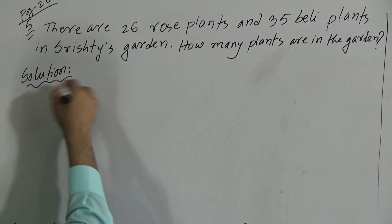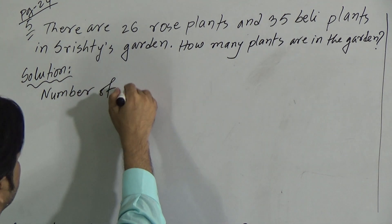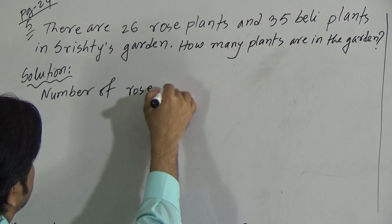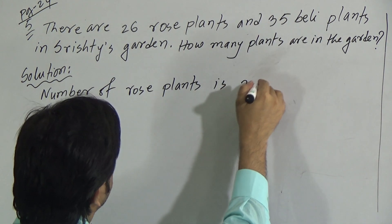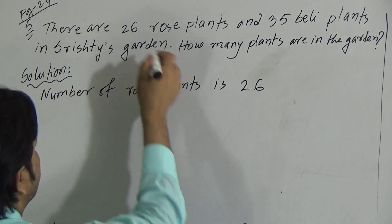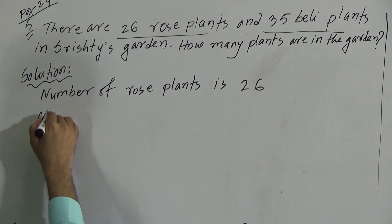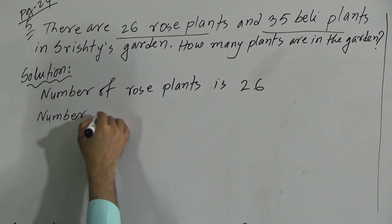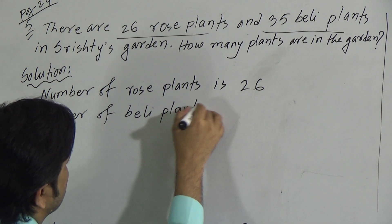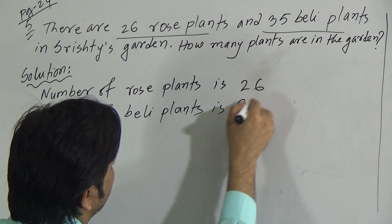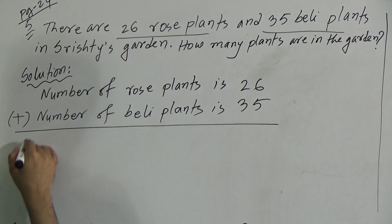So we can write the solution. Number of rose plants is 26. There are 26 rose plants and 35 belly plants. So we can write number of belly plants is 35. If we do the addition, we will get the total number of plants. Therefore, total number of plants is: